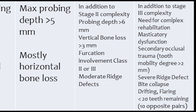Stage 4 complexity includes need for complex rehabilitation, masticatory dysfunction, secondary occlusal trauma, tooth mobility of 2 mm or greater, severe ridge defects, bite collapse, drifting, flaring, less than 20 remaining teeth, and we have to examine 10 teeth on opposite sides — 10 on the right and 10 on the left. For Stage 4, it is important that there are 20 teeth remaining in opposing pairs.